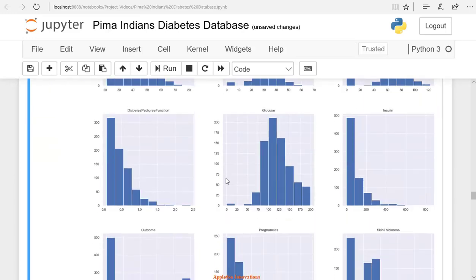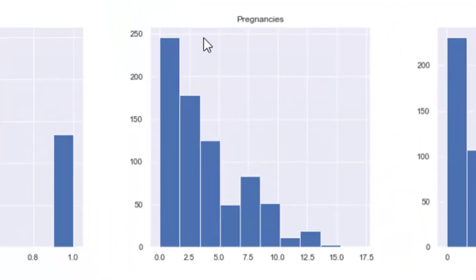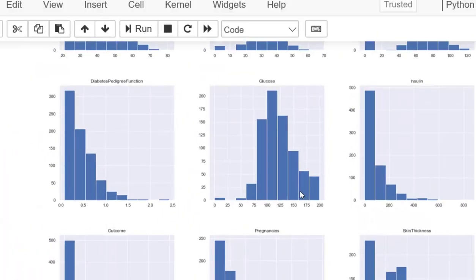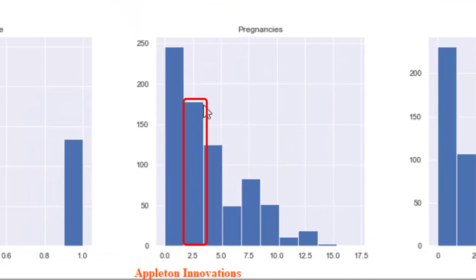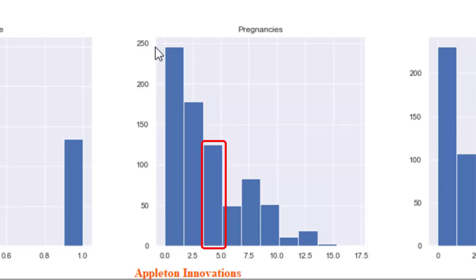First, we have the pregnancies column plot. Around 250 people have 0 or 1 pregnancies. The value 2.5 appears around 170 times, indicating nearly 170 people have been pregnant more than 2 times. The x values are bin values and the y value is the frequency. Around 120 people are pregnant more than 3 times, and 70 to 80 people have been pregnant more than 7 times.